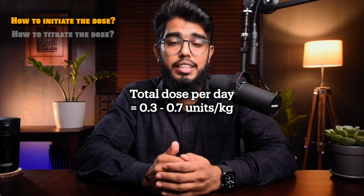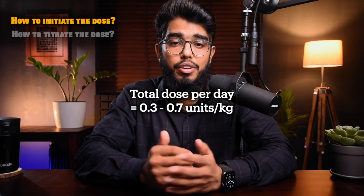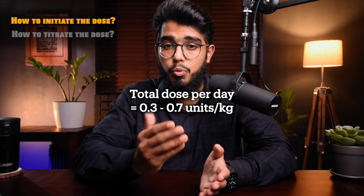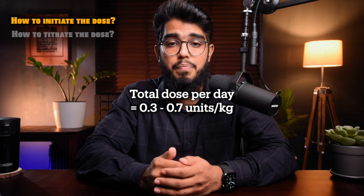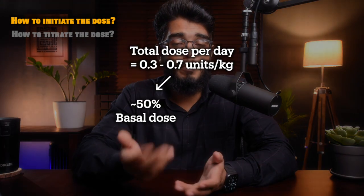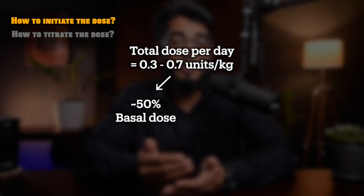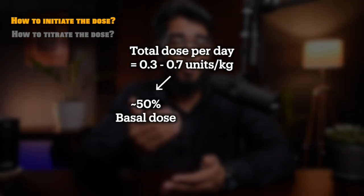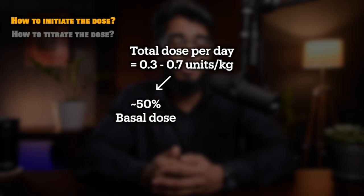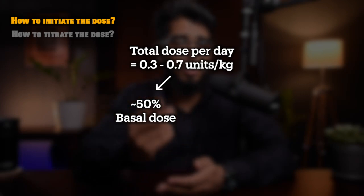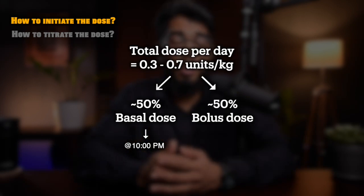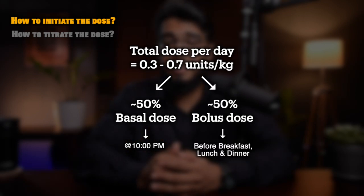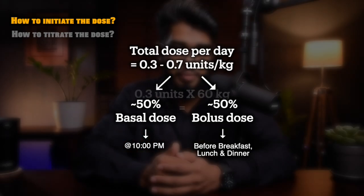The total dose required per day is 0.3 to 0.7 units per kilogram of body weight, divided into multiple doses. 50% of the total dose is given as basal insulin — a single dose of long-acting insulin taken 2 hours after dinner at around 10pm. The other 50% is given as prandial insulin, taken as 3 divided doses 30 minutes before each meal.